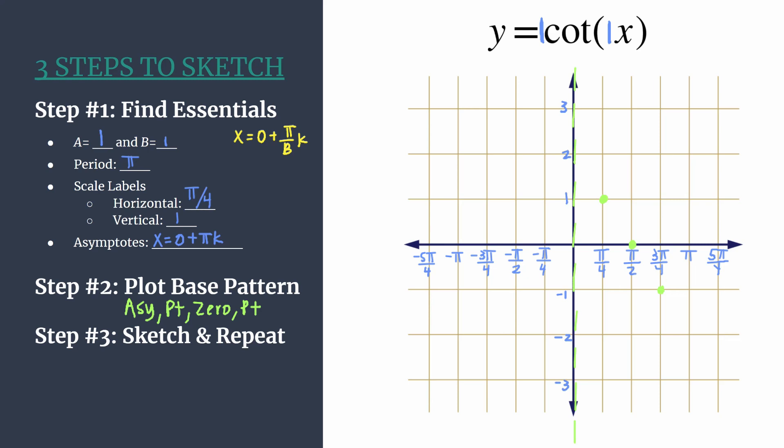And here you have it. We're ready for step three. Let's sketch in the actual graph and then we'll repeat for as many cycles as we want. So our cotangent curve comes down like this, hits through our points and our zeros, and continues on to what we know will be an asymptote. That's the start of our next cycle.